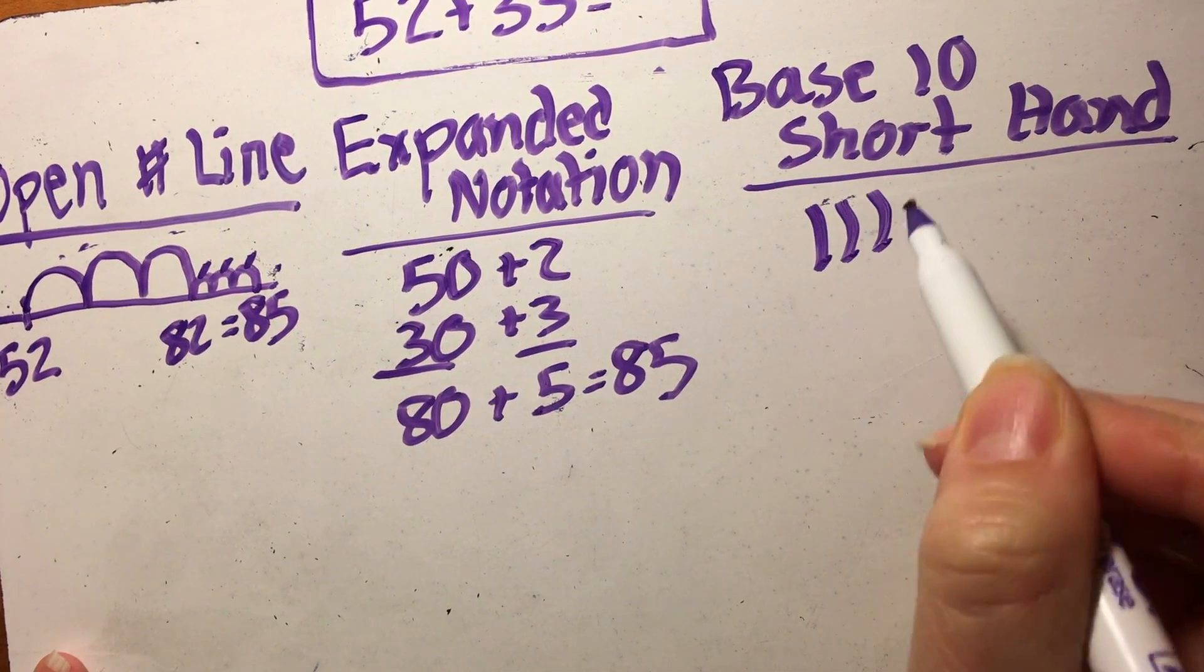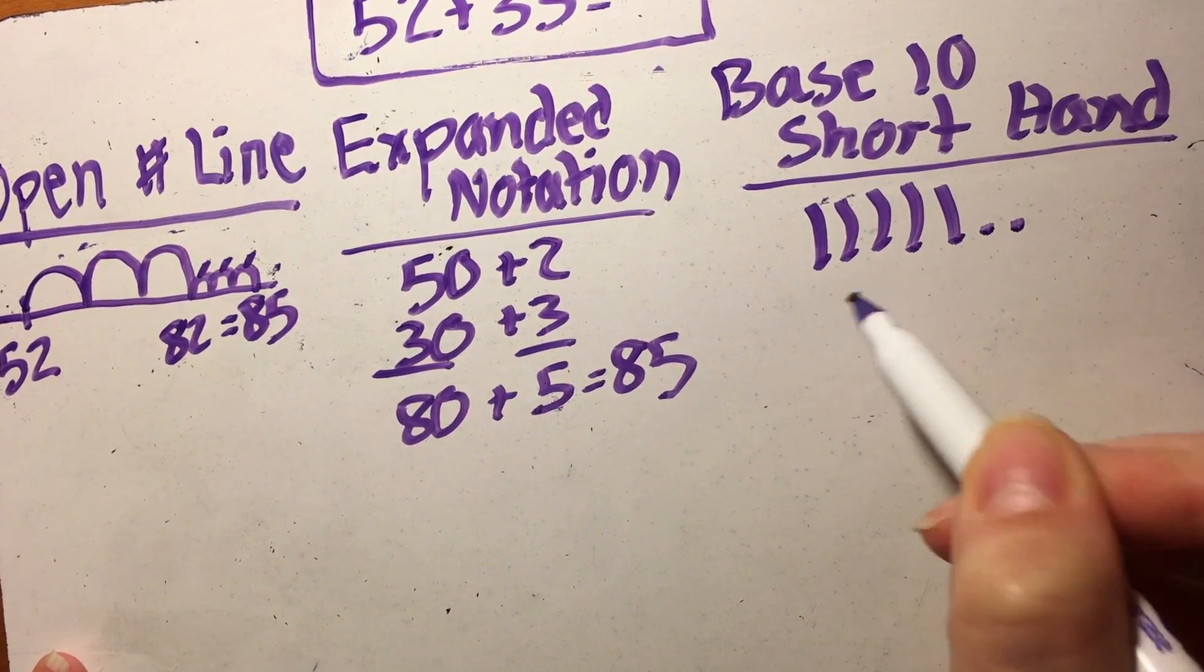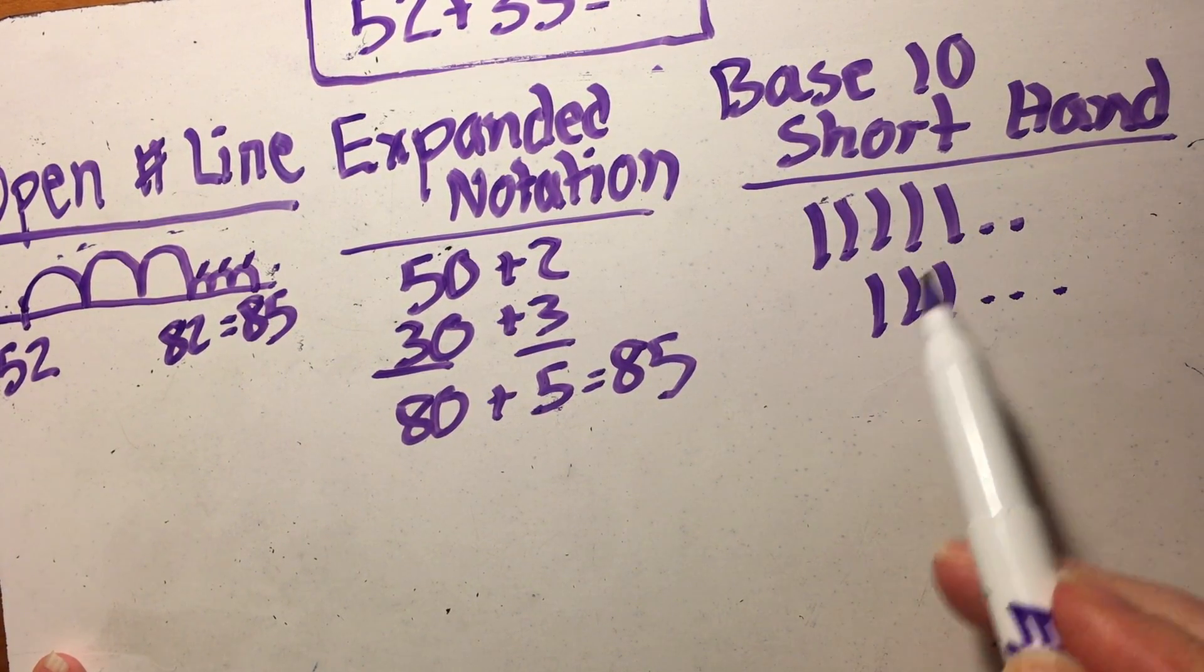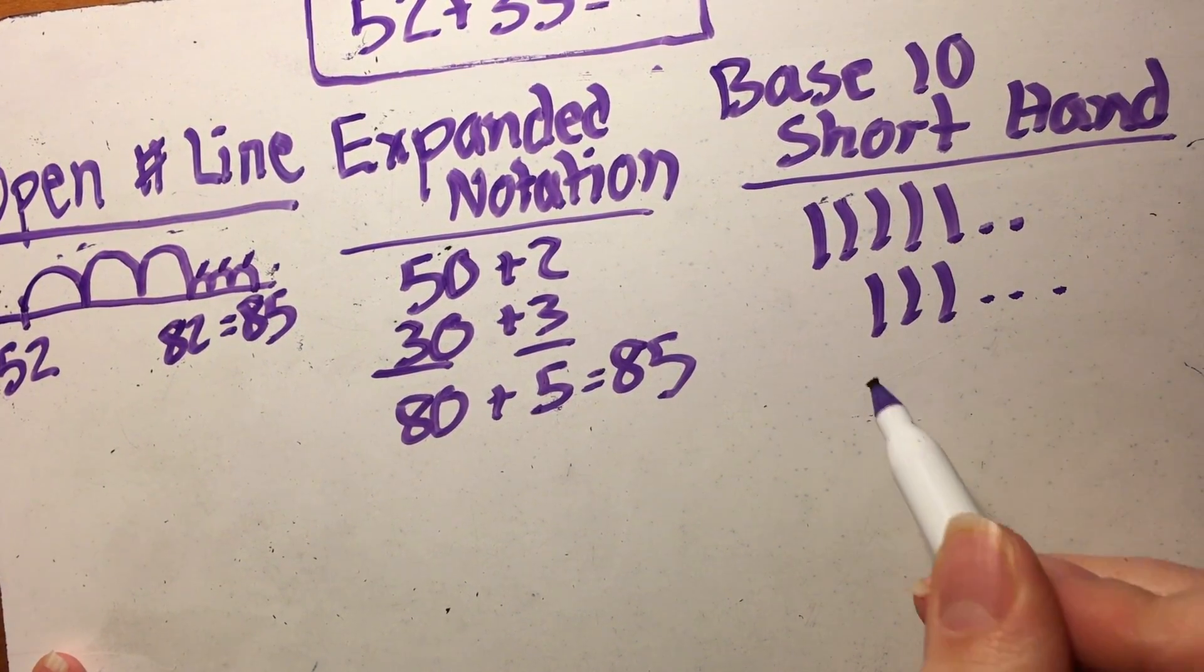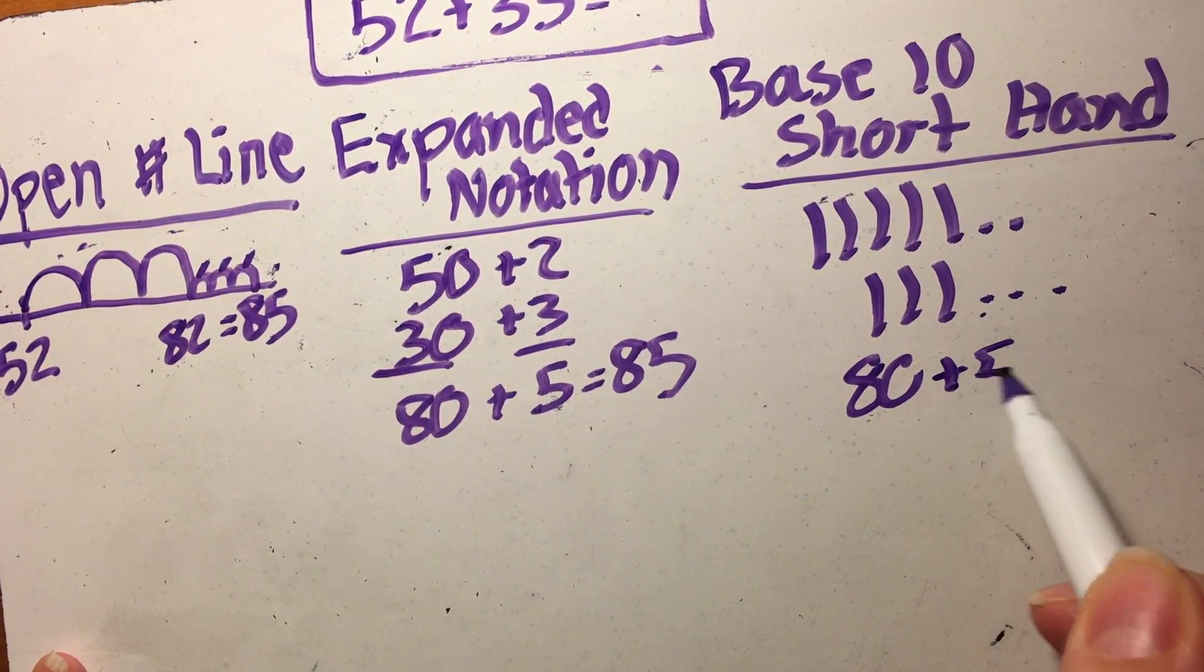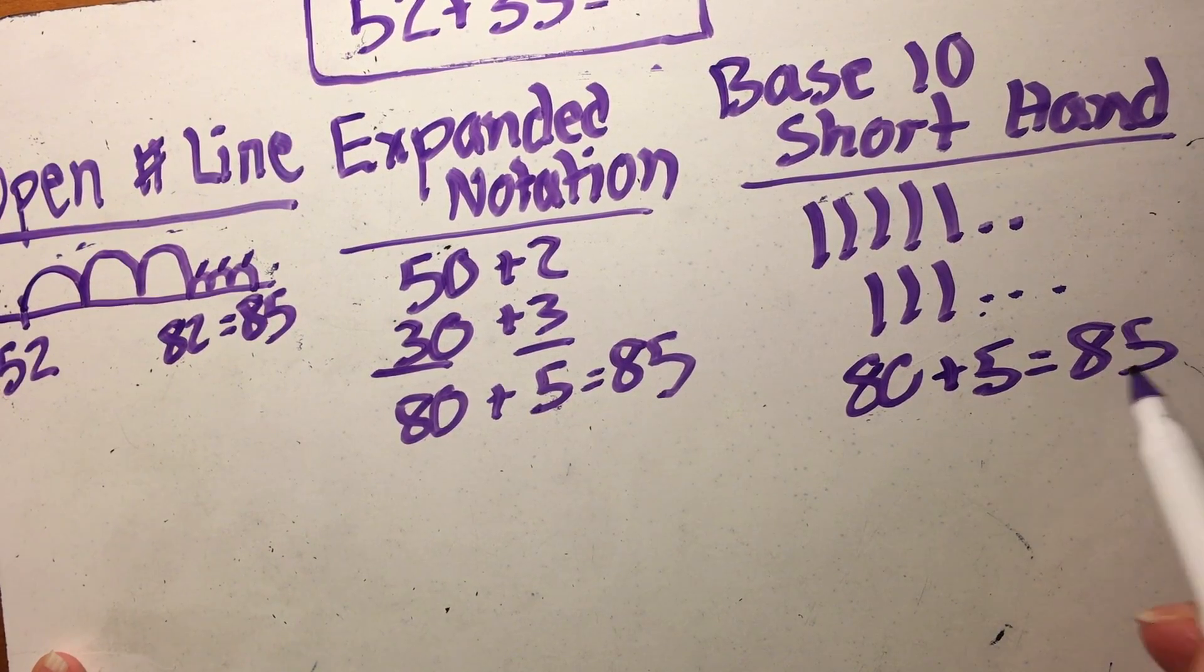In base ten shorthand: 10, 20, 30, 40, 50, 1, 2 and 10, 20, 30, 1, 2, 3. And when I add them all up that's going to be 80 plus 5 is 85. I counted up the tens and then the ones and put it into a number model for you there.